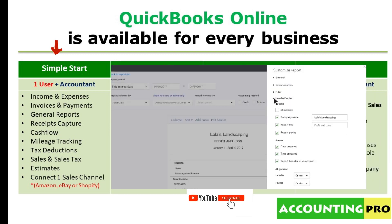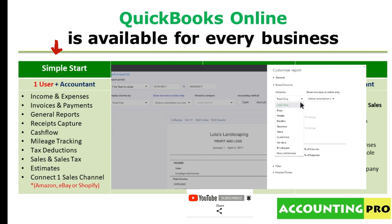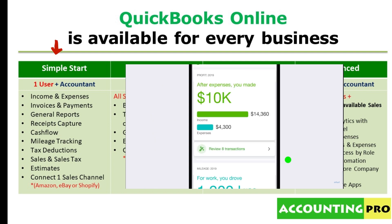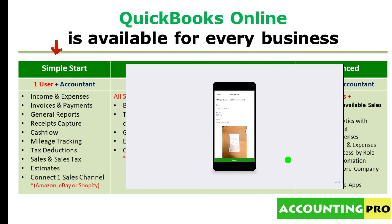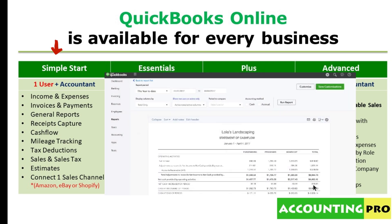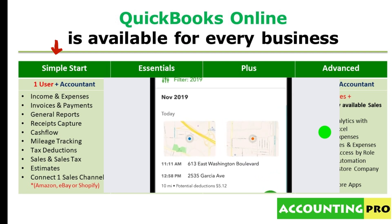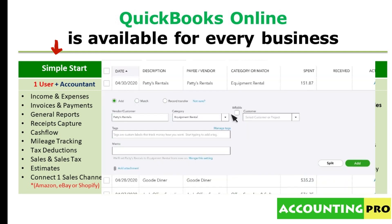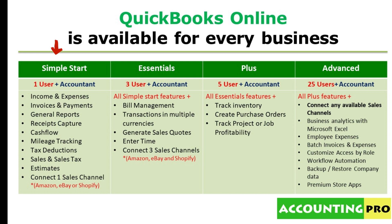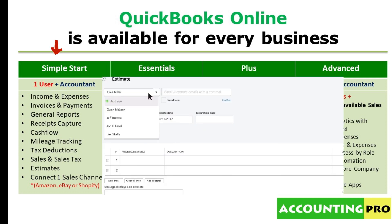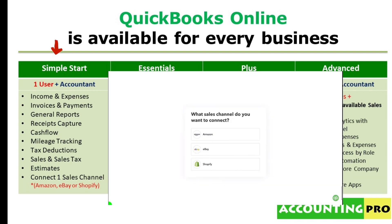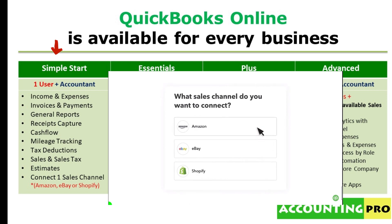In Simple Start you can run income and expenditure reports, send invoices and payments, and run general reports. With the receipt capture feature you can attach receipts to your expenses. You can run cash flow reports and use mileage tracking to differentiate work and personal travel. The tax deduction feature lets you tag transactions for annual taxation, and you can calculate sales tax on invoices, generate estimates, and connect sales channels like Amazon, eBay, or Shopify.